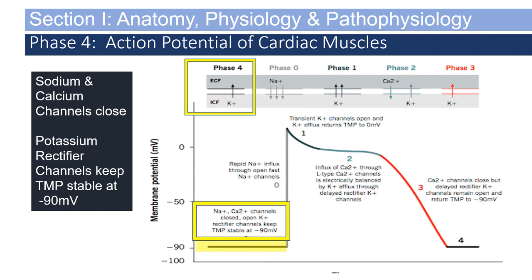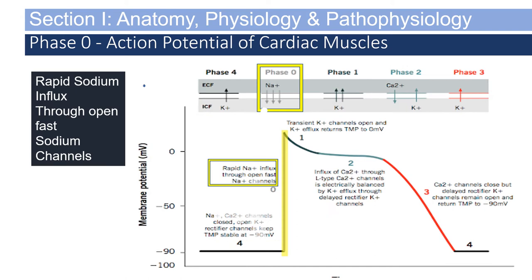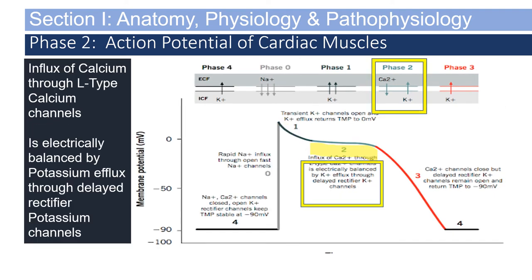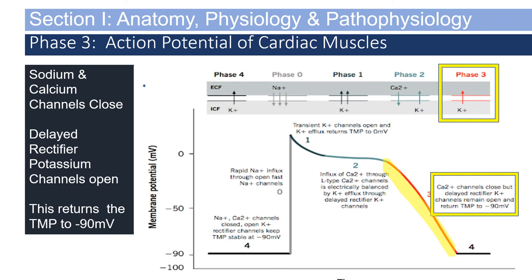In phase 4, sodium and calcium channels close, and potassium rectifier channels keep the transmembrane potential (TMP) stable at negative 90 millivolts. Phase 0 includes rapid sodium influx through open fast sodium channels. In phase 1, transient potassium channels open and potassium efflux returns TMP to zero millivolts. In phase 2, there is an influx of calcium through L-type calcium channels, electrically balanced by potassium efflux through delayed rectifier potassium channels. Phase 3 includes sodium and calcium channels closing, with delayed rectifier potassium channels opening to return TMP to negative 90 millivolts.